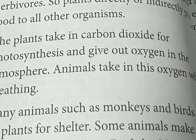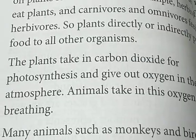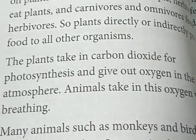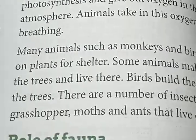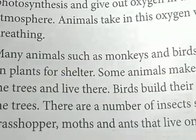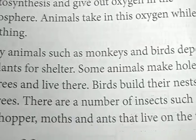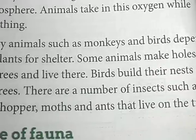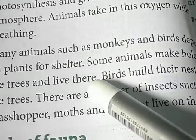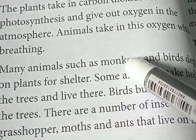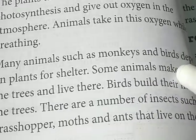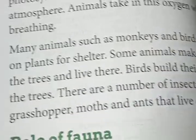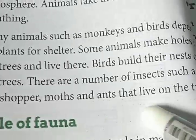Green plants release oxygen through the process of photosynthesis. Many animals such as monkeys and birds depend on plants for shelter. Some animals make holes in trees and live there, birds build their nests on trees, and insects such as grasshoppers, moths, and ants live on the trees. So trees are very important not just as producers but also as shelter for different types of animals.